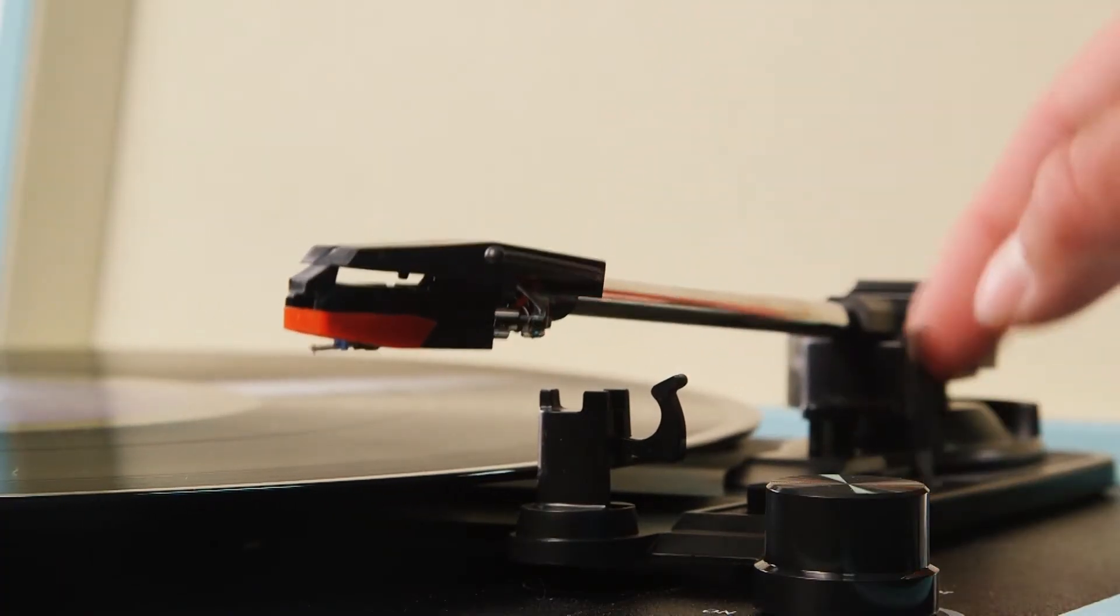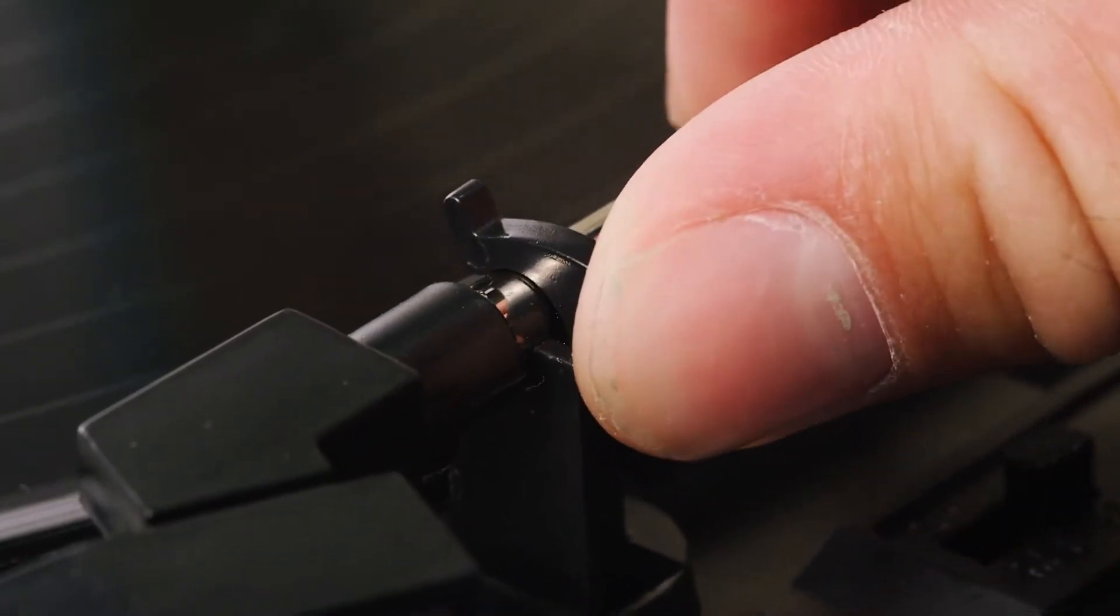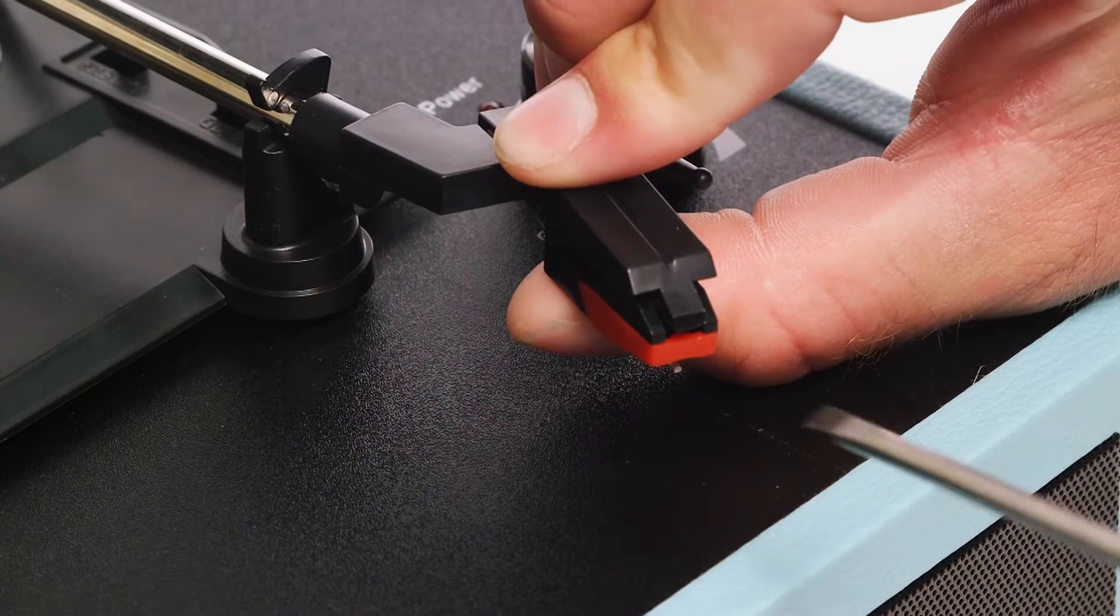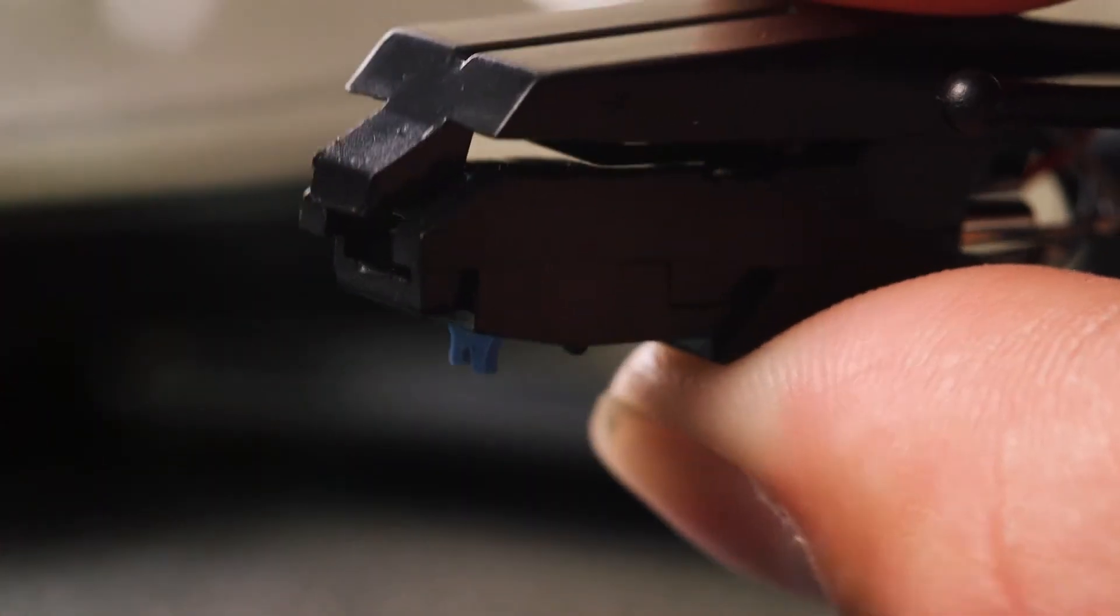Firstly, ensure that the tonearm is secured by the clip. Next, insert a small flathead screwdriver into the space above the stylus and gently push downward until it unclips. Pull the stylus away from the tonearm.